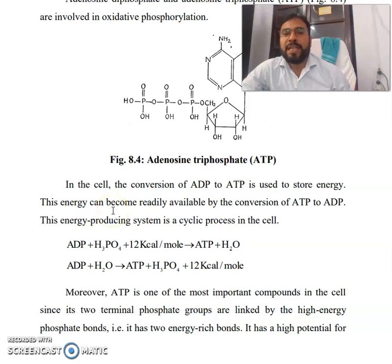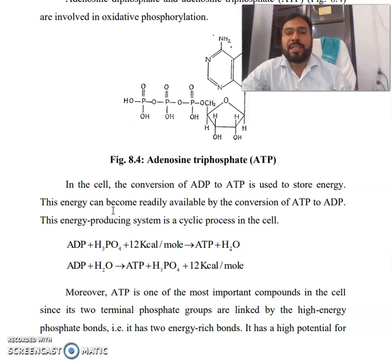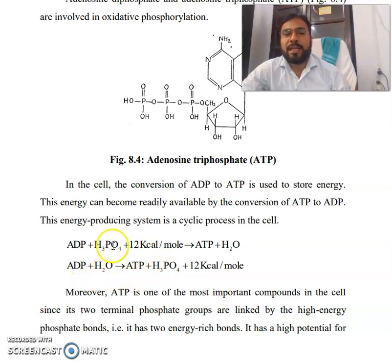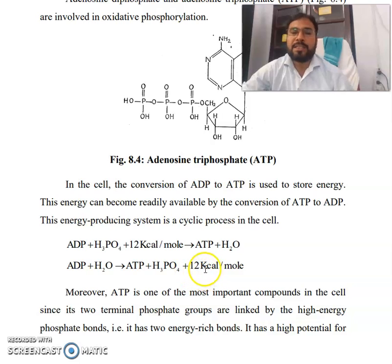In the cell, the conversion of ADP to ATP is used to store energy. This energy can become readily available by conversion of ATP to ADP. This energy-producing system is a cyclic process in the cell. ADP plus phosphoric acid (H3PO4) gives ATP, water, and a certain amount of kilocalories of energy per mole. Further, ATP plus water gives ADP, phosphoric acid, and that amount of energy.